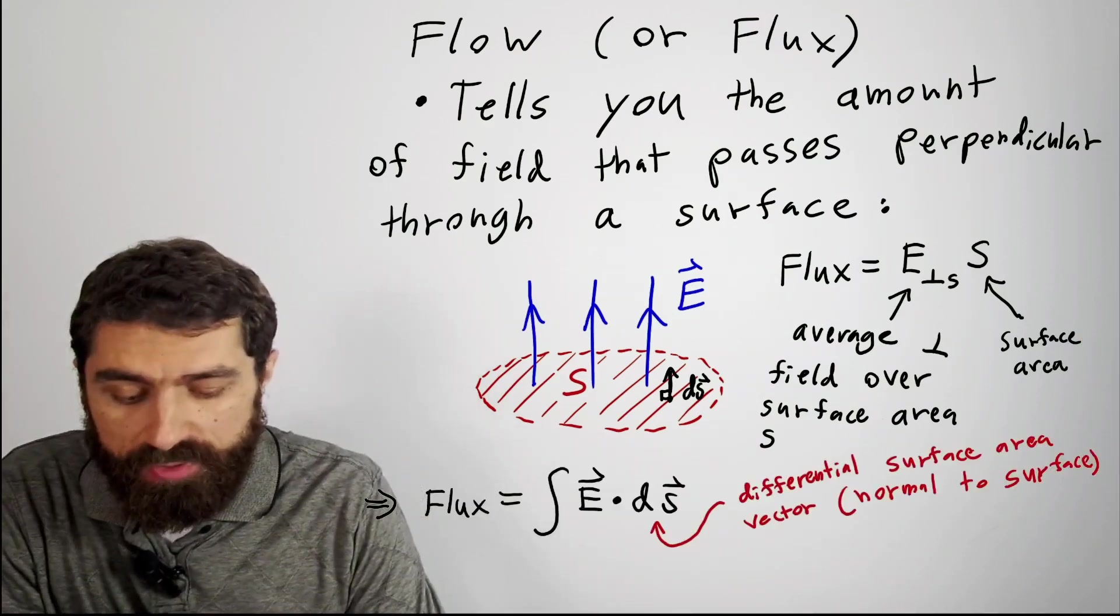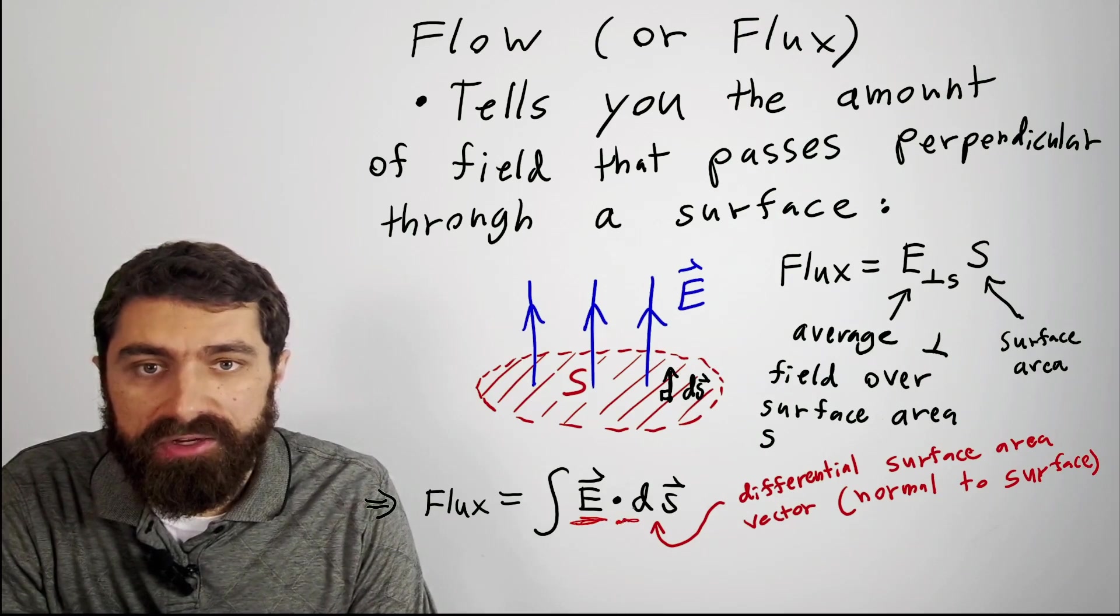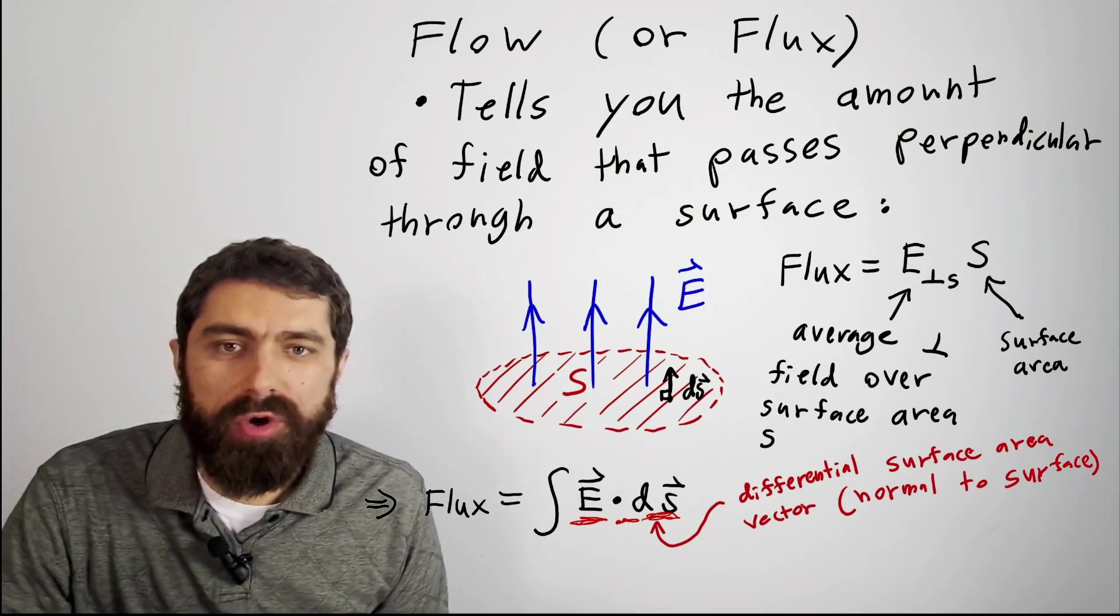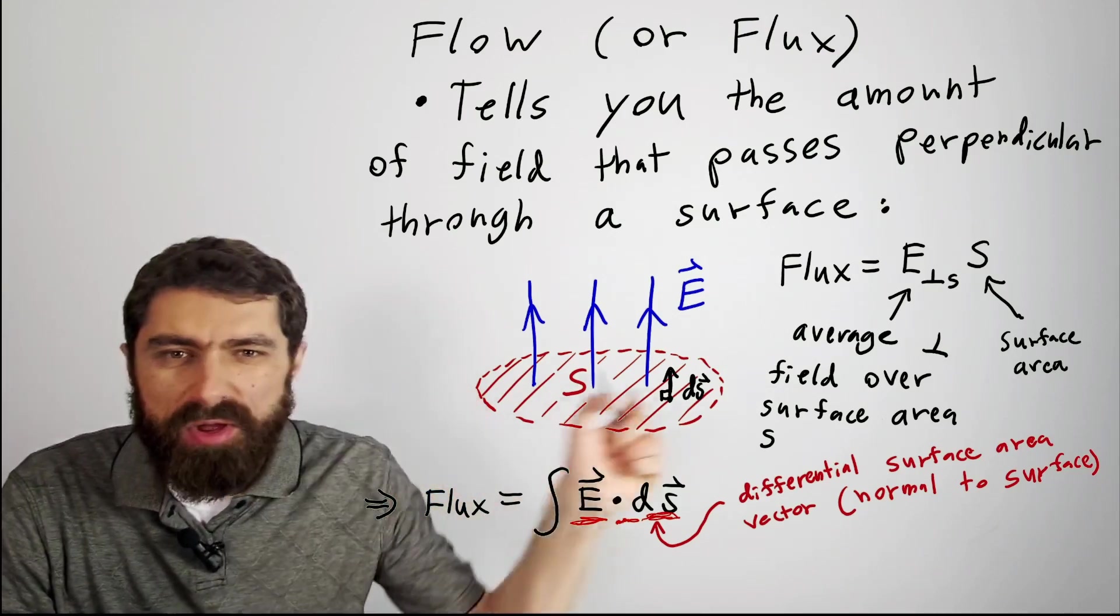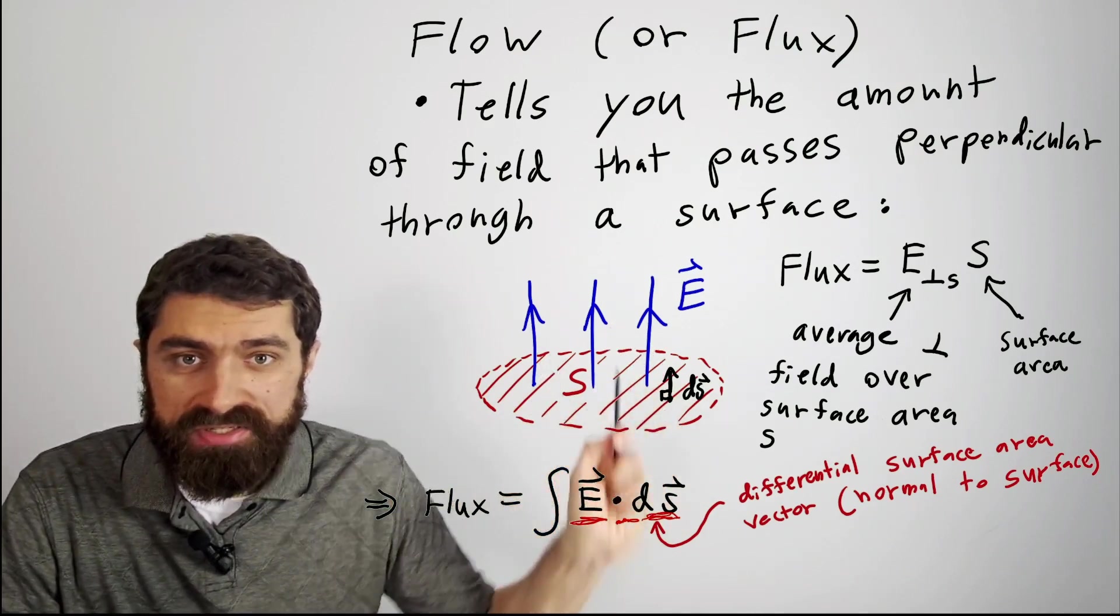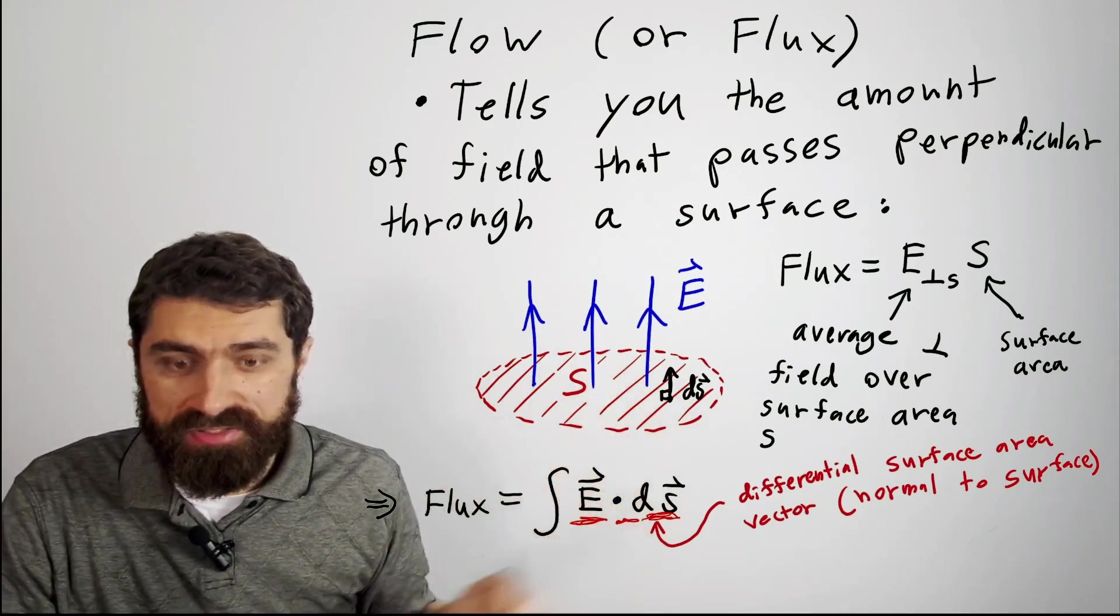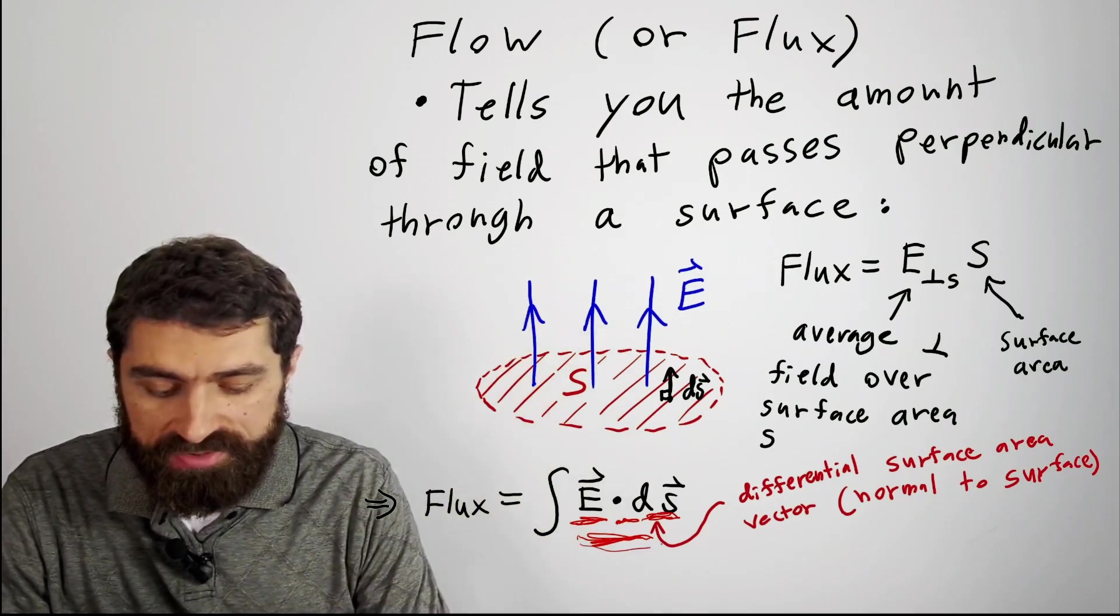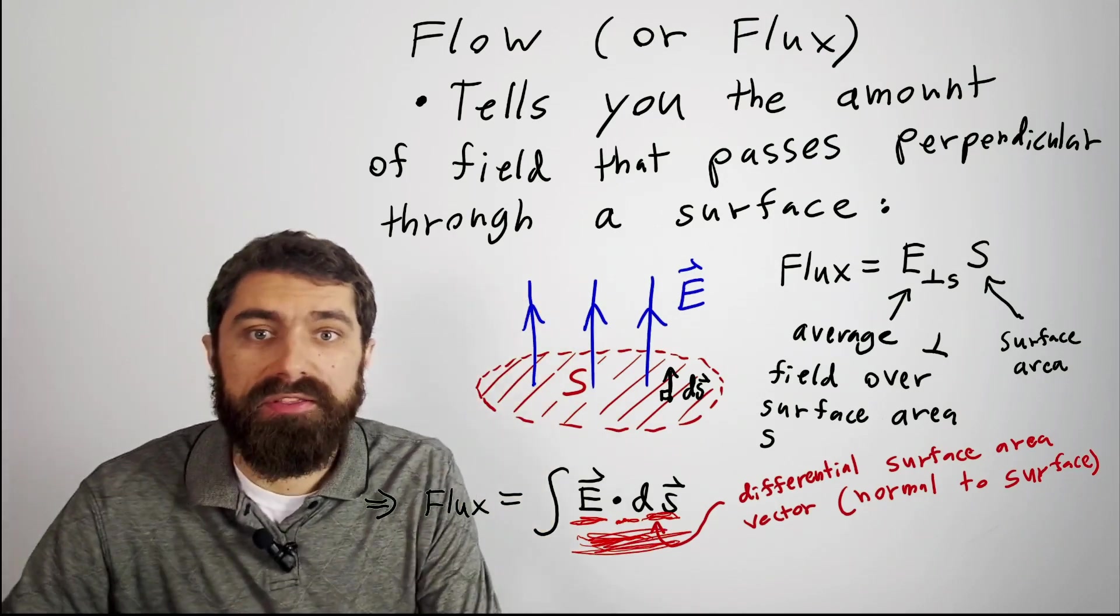Put more formally, we say that that would be the integral of the electric field dotted with a differential surface area. We'll get into more examples of how to make a differential surface area, but basically it's an infinitesimally small surface area on this surface, and we define it as a vector that points normal to the surface. So basically what this is saying is you integrate the normal component of the electric field to the surface across the entire surface, and that will give you the flux through that surface.